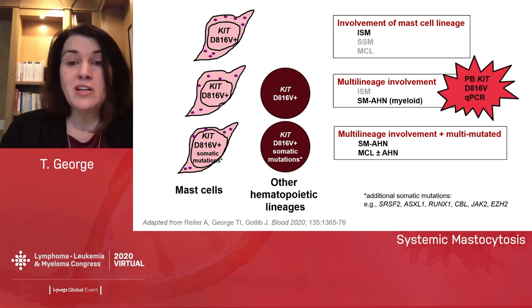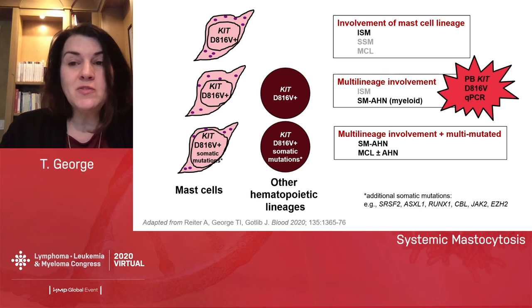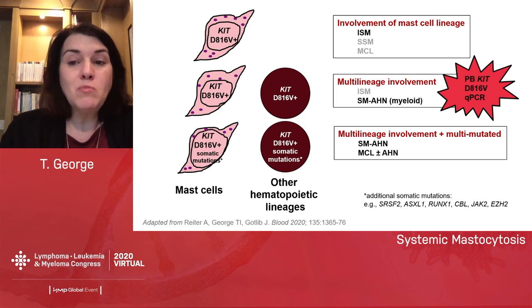If you check these patients' peripheral blood using a super-sensitive quantitative PCR technique for KIT-D816V, it'll be positive even though there are no circulating mast cells. Then there's a third group with multi-lineage involvement plus multi-mutated disease — they have these additional somatic mutations as shown.